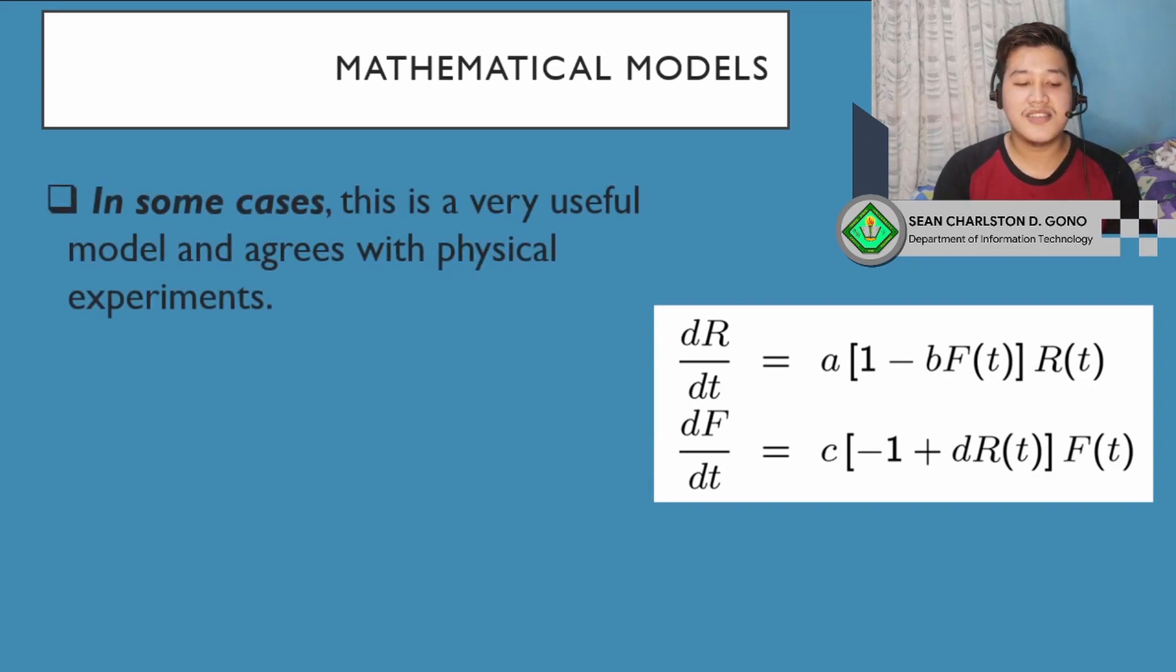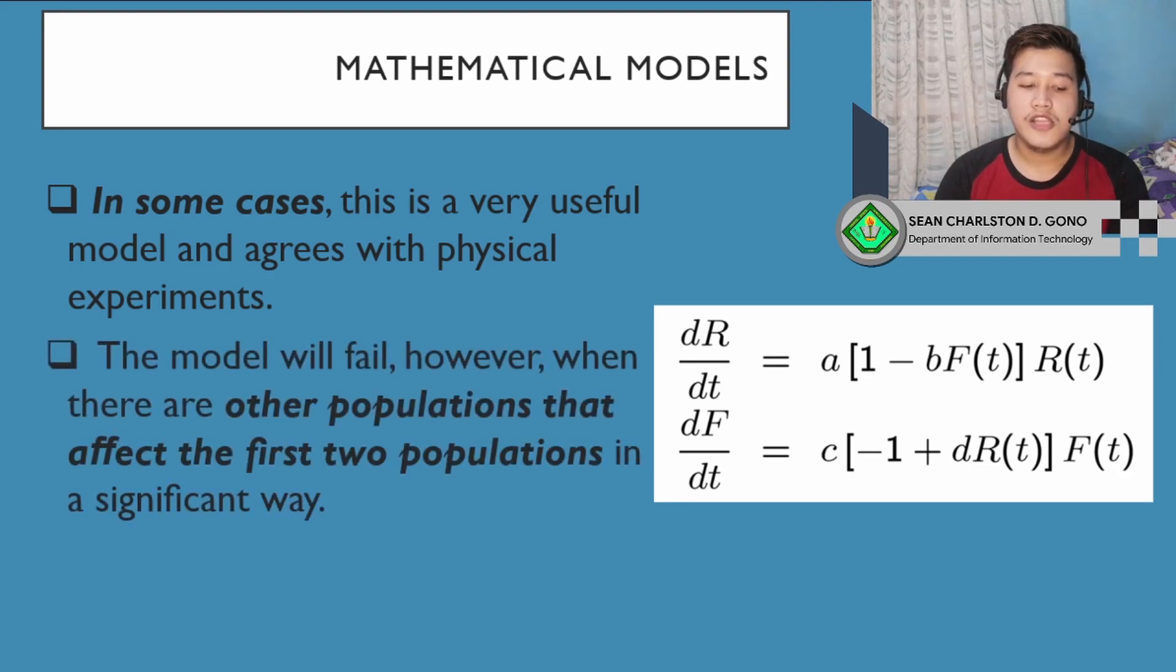In some cases, this is a very useful model and agrees with physical experiments. This is the nature of the world—there are predators and preys. But the model will fail when there are other populations that affect the first two populations in a significant way. For example, the predator has another predator, or there are two predators that hunt the prey. Or maybe there are viruses or bacteria that affect the prey entirely—they may decrease before being hunted by predators. Or there are viruses or bacteria that affect the predator's side. They may die before they hunt the prey. There are a lot of factors that can affect the predator-prey model. So this model does not accurately represent the wilderness.